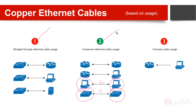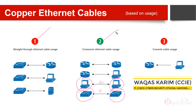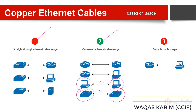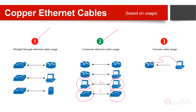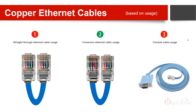The third type is a special type used just for configuration, not for data transfer. Here we connect a laptop or computer as a temporary device to a router or any other network device to do configuration. This type of cable is called a console cable.